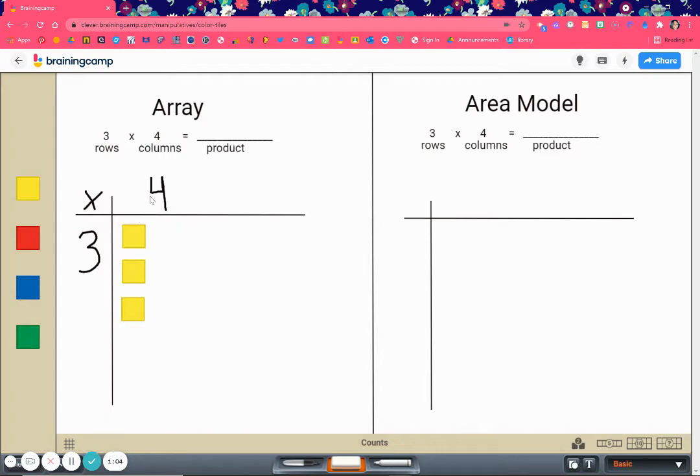Then we're going to set up our columns. This square is counted for the beginning of your rows and your columns, so you're going to count this again for your columns. That's 1, 2, 3, and 4. Now, this is not an array. An array has to have equal number of tiles in each row and each column, so we need to fill it in.